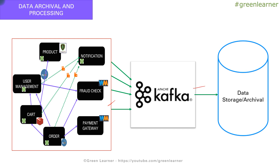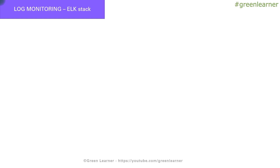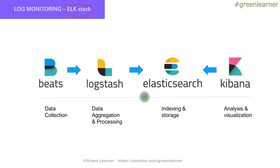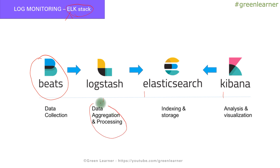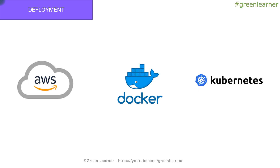Coming to the next part: log monitoring. All the individual microservices are going to generate some amount of logs that we need to use in case of any latency, delay, or error happening in the system. For that we are going to use the ELK stack — ELK stands for Elasticsearch, Logstash, and Kibana. Beats is going to collect the log information from the individual microservices, Logstash is going to aggregate and process the data, Elasticsearch is going to handle the indexing and storage, and finally Kibana provides the UI to analyze and visualize the data.